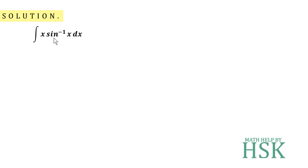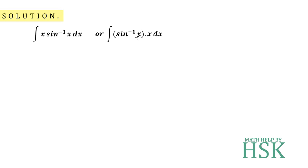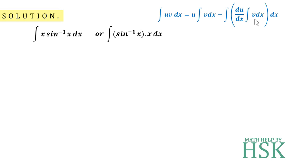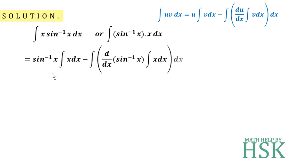First, we sort out which function to assume as the first function and which as the second. Since we cannot integrate sin⁻¹(x) directly, we assume sin⁻¹(x) as the first function and x as the second function. The integral is written with sin⁻¹(x) as the first and x as the second function.